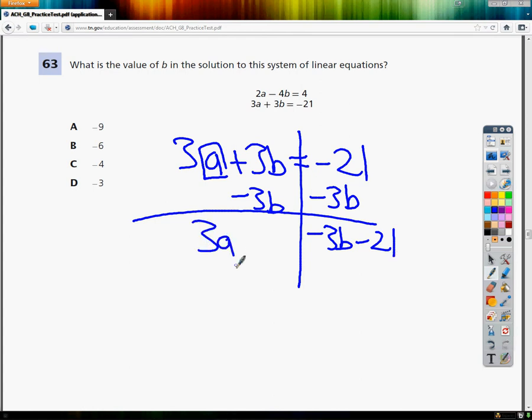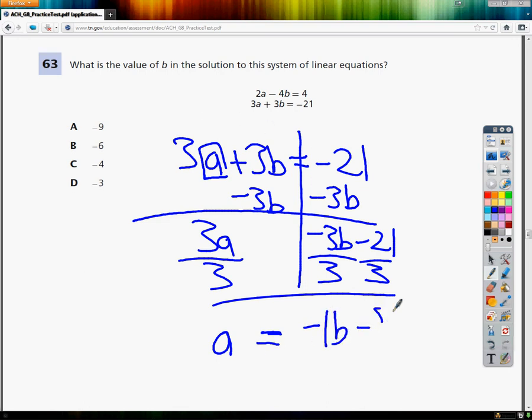Then I bring down 3A. Now, all I have to do to get A by itself is get rid of that times 3. I know it's times 3 because they're touching. To get rid of times 3, I divide by 3. Everything divides by 3. So I get A is equal to negative 1B minus 21 divided by 3 is 7. So that's another way I could write A. So instead of writing A, I could just write negative B minus 7.